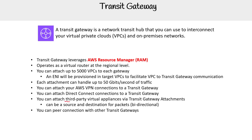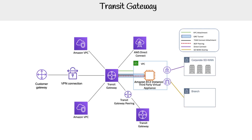Regarding third-party virtual appliances — we talk about these when we discuss gateway load balancer. The idea is that you have a virtual machine running some kind of security service, and all your traffic passes through it to filter traffic or do monitoring and detection. Transit gateway can serve that function as well, though you can also use gateway load balancer in different scenarios.